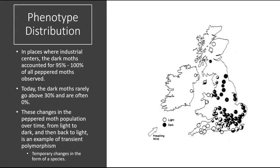Looking at the phenotype distribution, London — one of the most heavily industrialized areas — had prevailing winds pushing pollution along the eastern coast of Great Britain. Due to increased industry during the Industrial Revolution, large amounts of polluted particulates entered the air, causing vegetation along this eastern coast to be caked with soot. Looking at the pie charts, the areas shown with mostly black represent populations where the majority of sampled peppered moths were in fact the melanic form, and the white speckled wild-type phenotype was the minority.